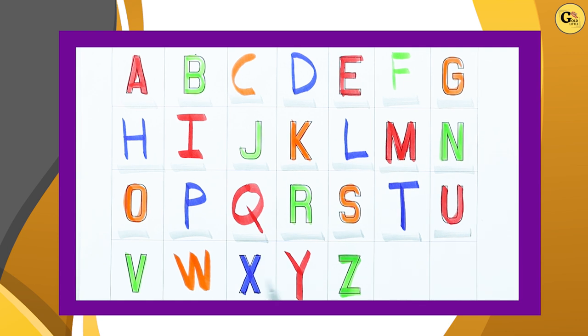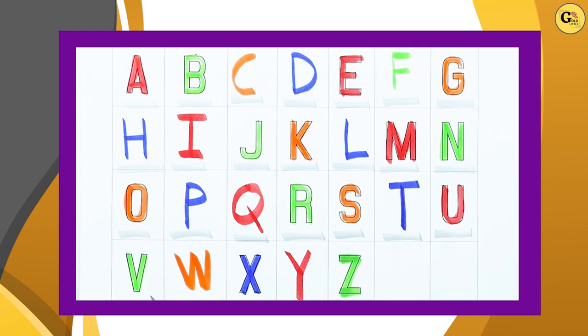U. U for umbrella. V. V for van. W. W for porch. X. X for xylophone.